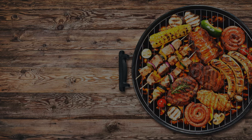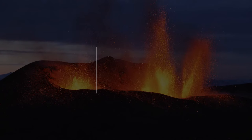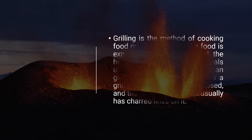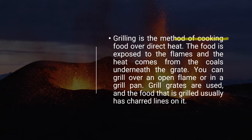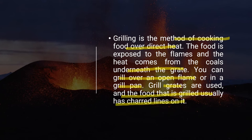Cooking Methods. Grilling. Grilling is a method of cooking food over direct heat. The food is exposed to the flames and the heat comes from the coals underneath the grate. You can grill over an open flame or in a grill pan. Grilled grates are used and the food that is grilled usually has charred lines on it.